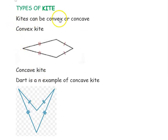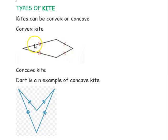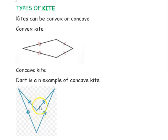There are two types of kite. The first is the convex kite, where all angles are subtended inside the figure. The second is the concave kite, where one angle is subtended outside and its interior angle is greater than 180 degrees, forming the shape of a cave.